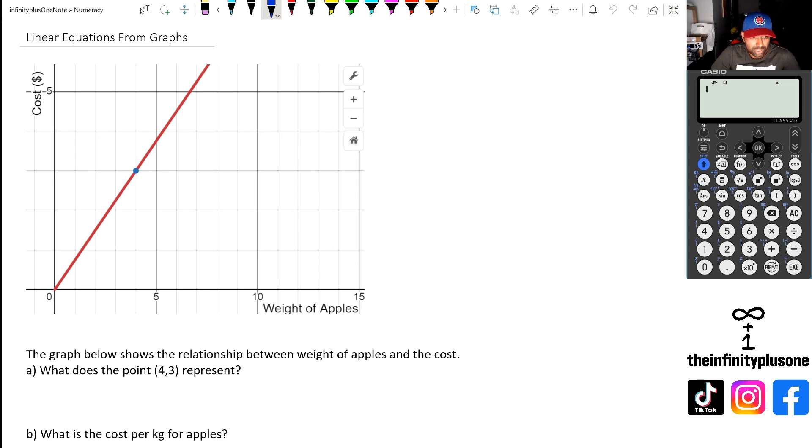So if you look at the first question here, the graph shows the relationship between the weight of apples and the cost. What does the point (4,3) represent? The 4 is the weight in kgs, which costs $3. That's what the 3 represents there.